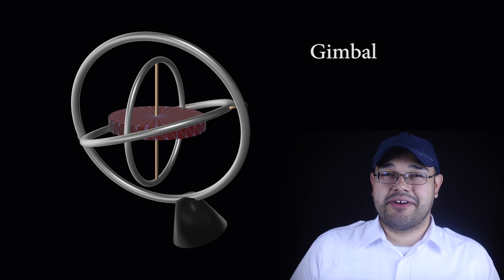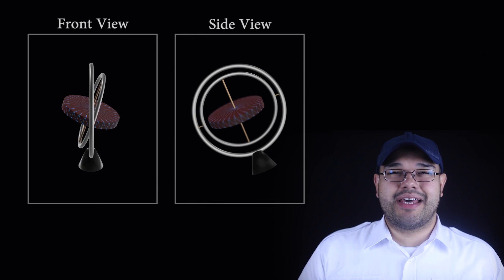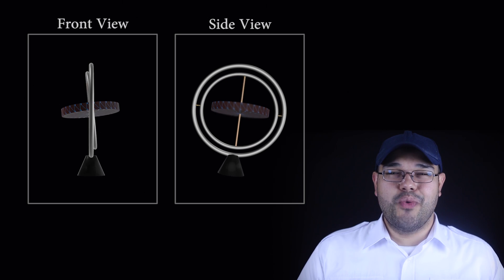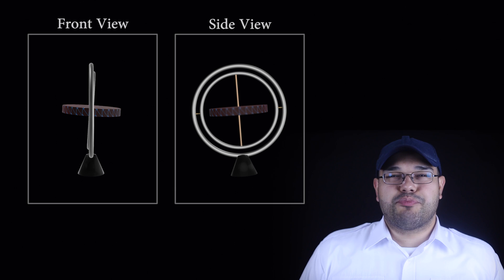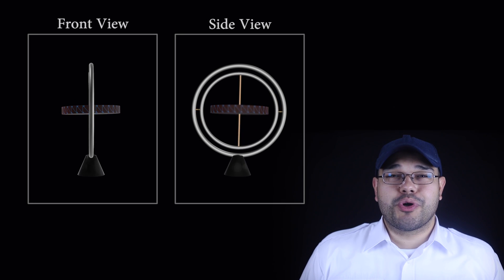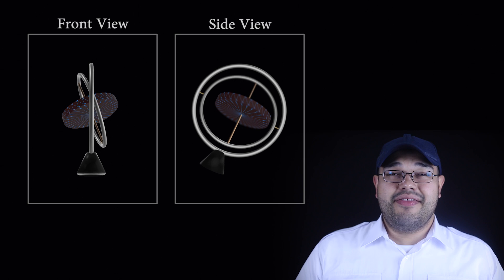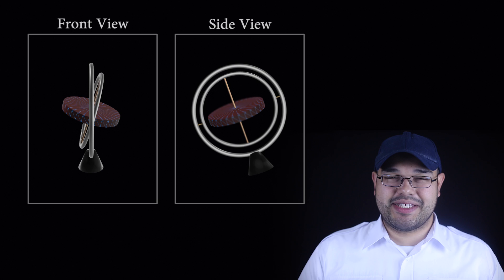Rate gyros are mounted so that they are forced to rotate with the instrument casing in one direction and are spring loaded in the precession direction. The spring loading is calibrated so that the deflection of the gyro is proportional to the rate of rotation. This system requires two gimbals, one for the direction of spin and one for the direction of precession.